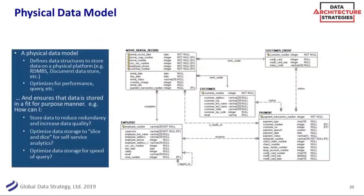As we get through to the physical data model, that's where you start looking at different database structures — whether it's an RDMS, document data store, etc. You want to start to optimize for query performance. Do we want to put it in third normal form? There's great reasons: if you want things accurate and non-duplicated, you'd hope your operational systems have those checks and balances. Do we want to flatten it for performance? Do we want a key-value pair? Do we want a dimensional model for reporting? Before you think through how, think of the what: do we want to reduce redundancy and increase quality, or optimize for speed of query?